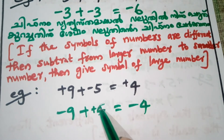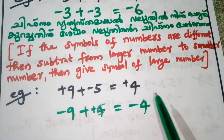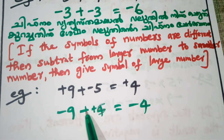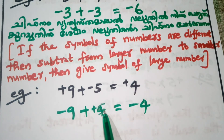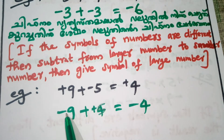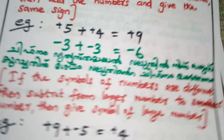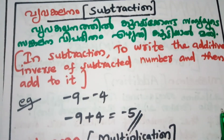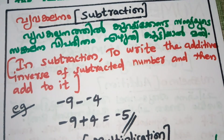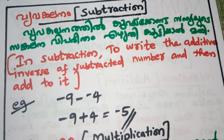So here: negative 9 and positive 5. The larger number is 9, which is negative. We subtract: 9 minus 5 gives us 4. Since 9 is negative and it is the larger number, the result is negative 4. This is the worked example.